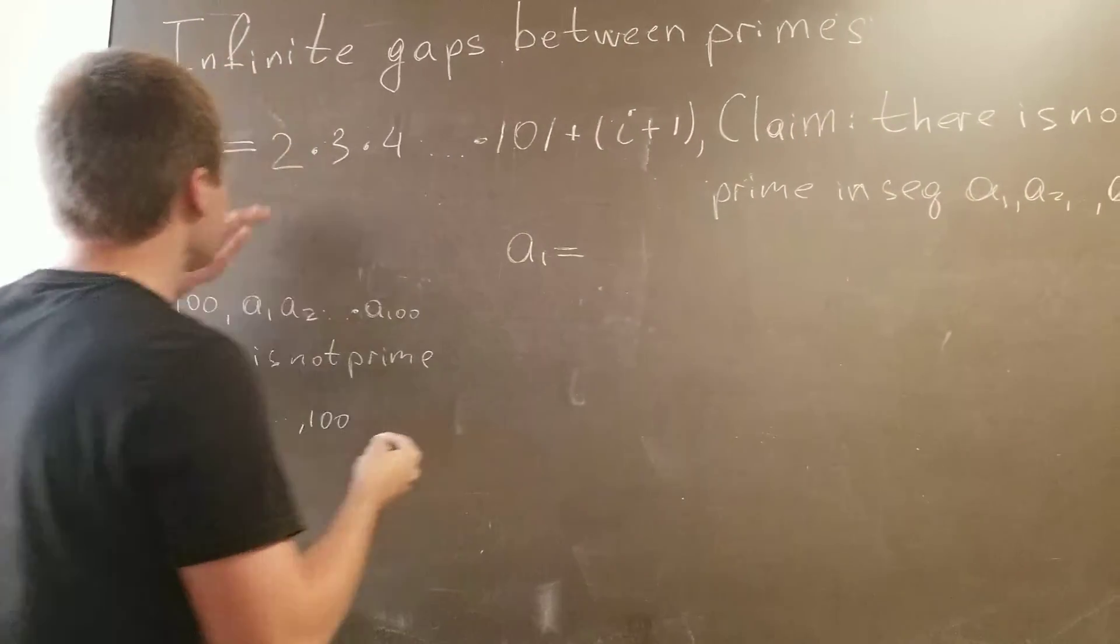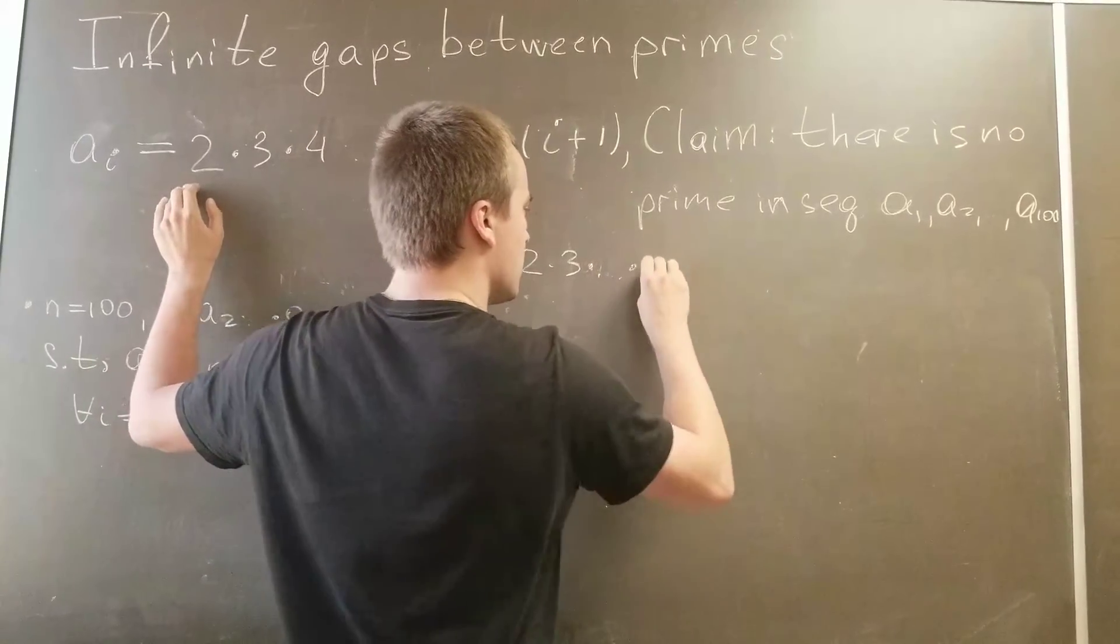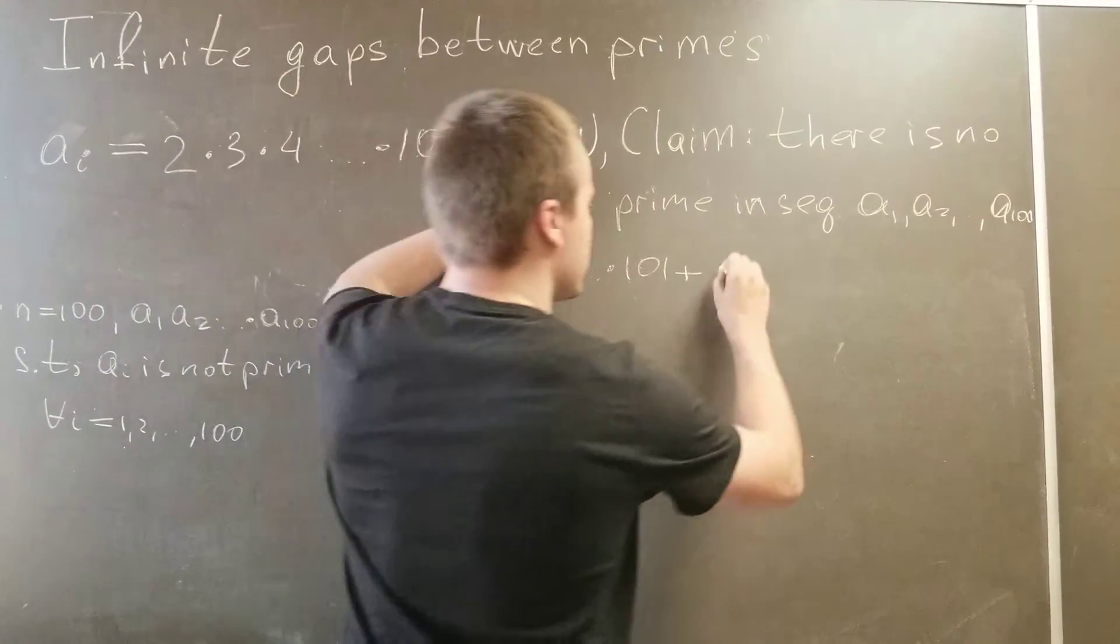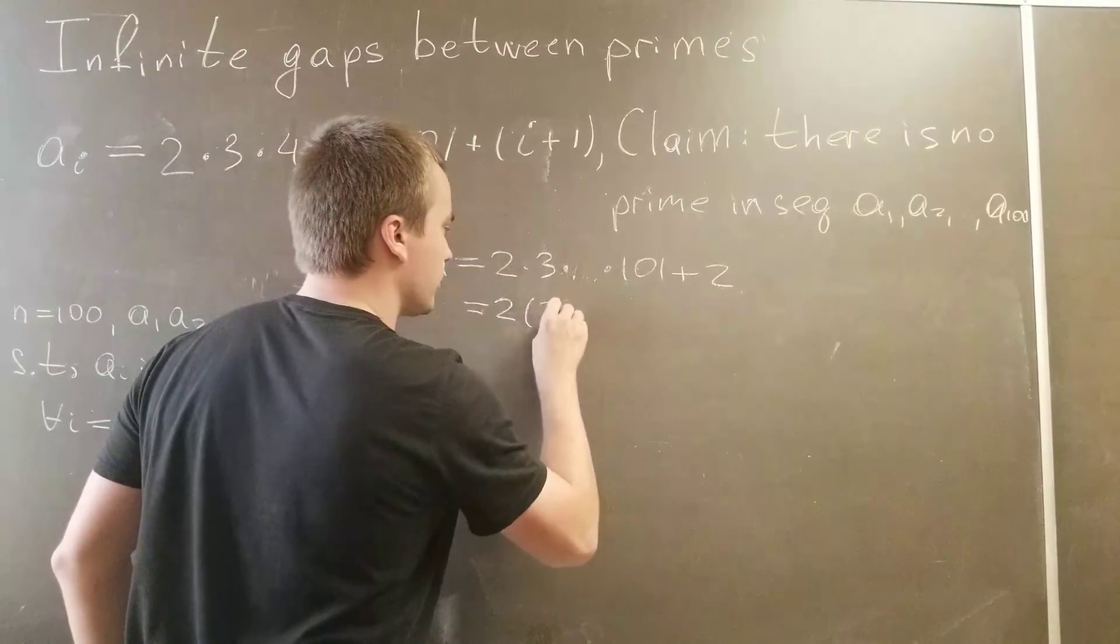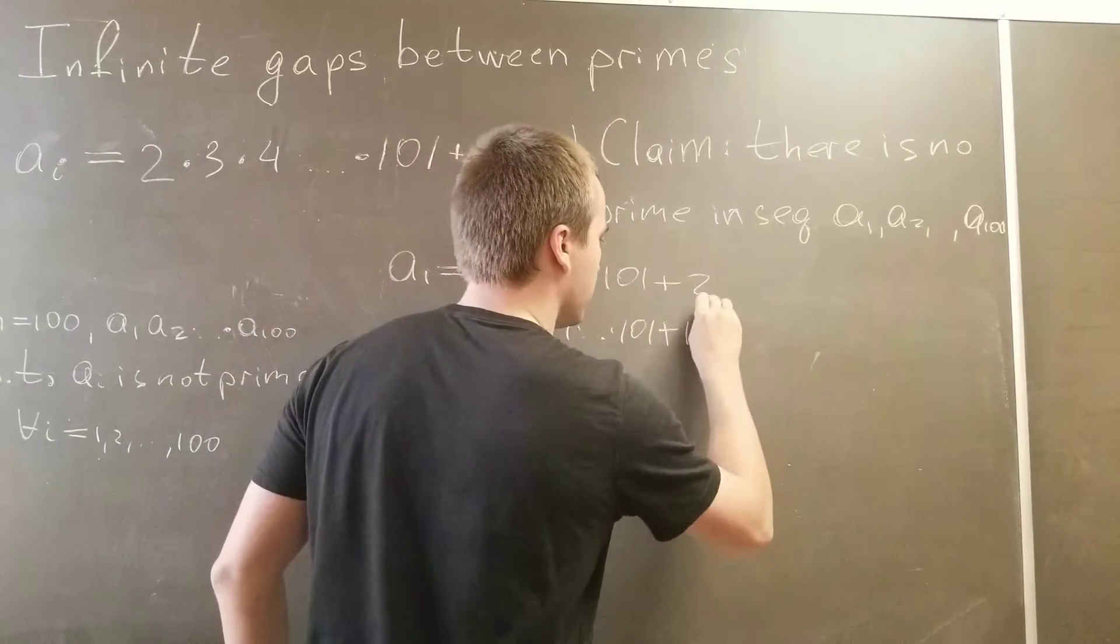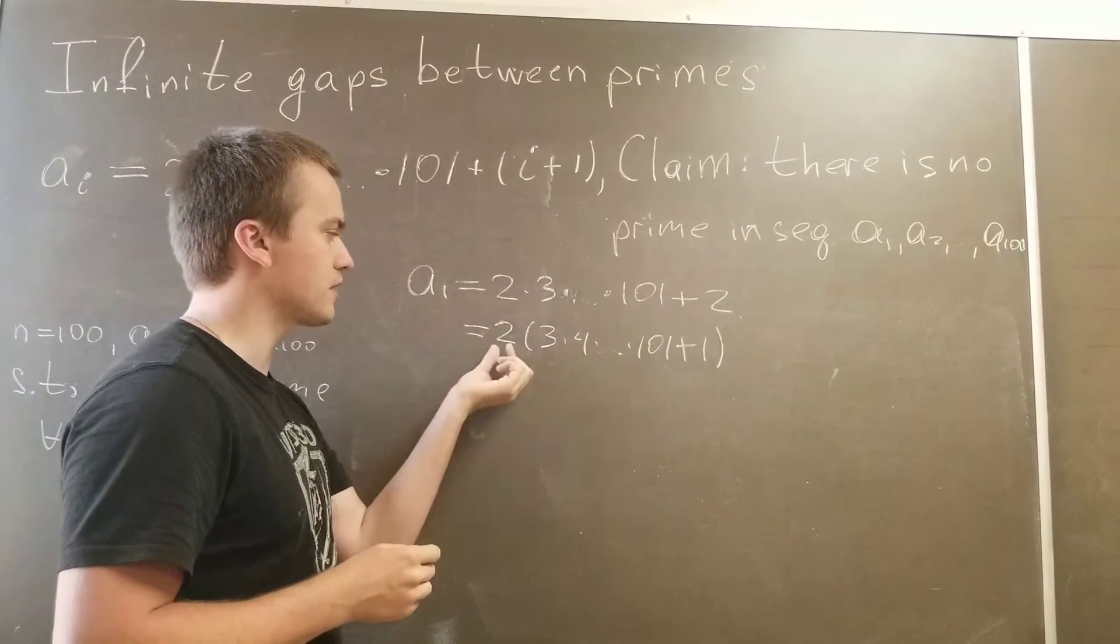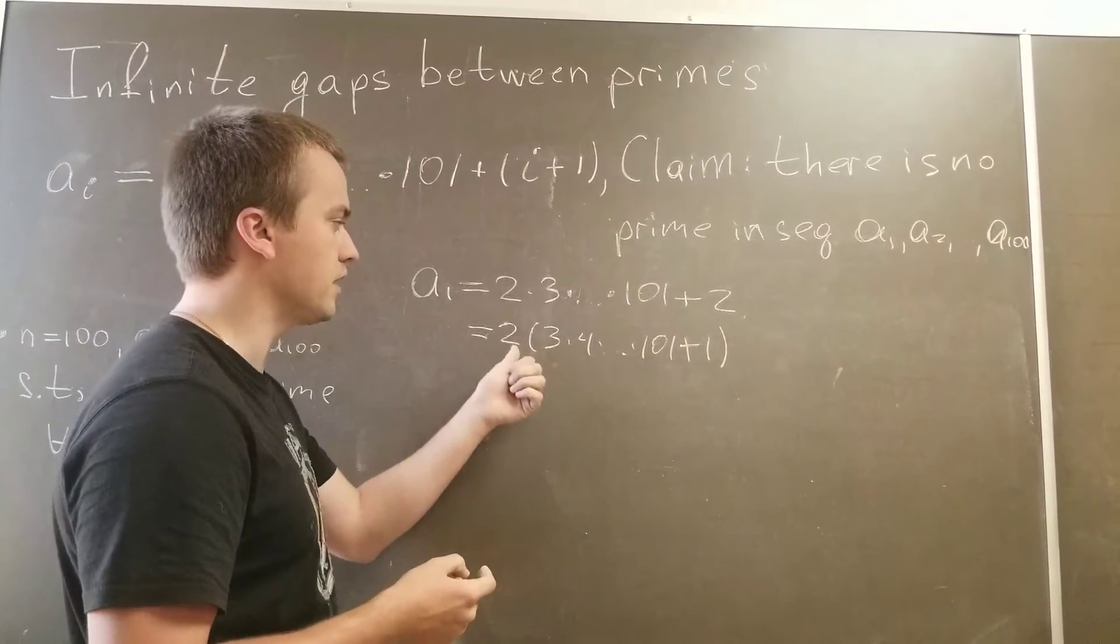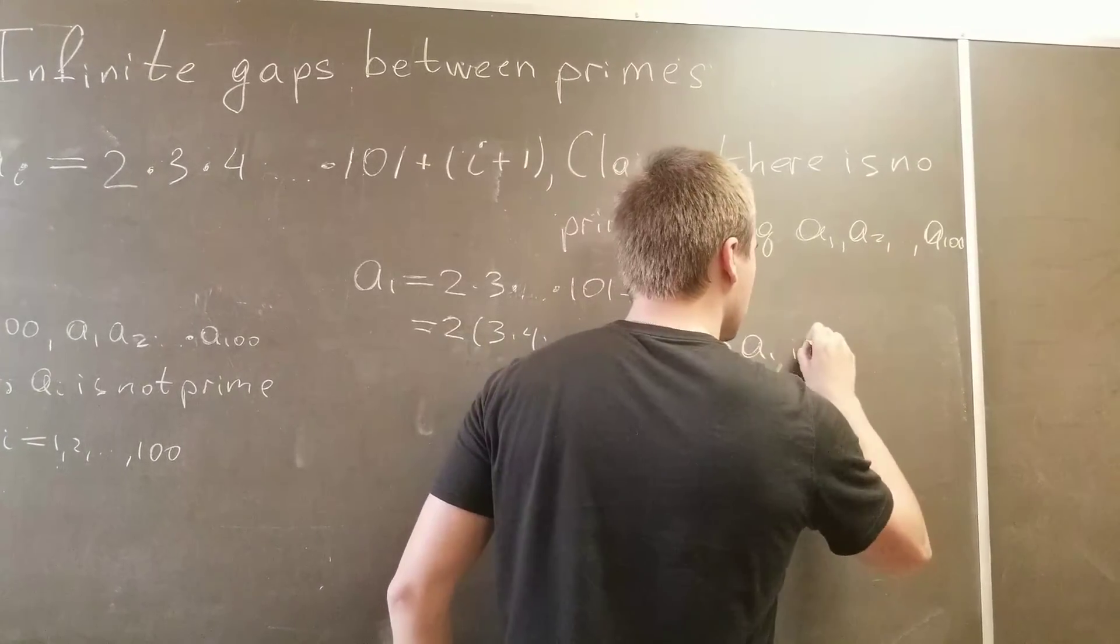So what is a_1? a_1 is 2 times 3 times... times 101 plus 2. And what you can see for this number is you can factor out 2. So we get 2 times (3 times 4 times... times 101 plus 1). And based on this you can see that this number is not prime because for this number you have at least two divisors: 2 and this other number. And for prime numbers, the only divisors are 1 and the number itself. So a_1 is not prime.